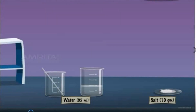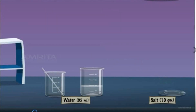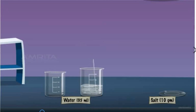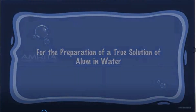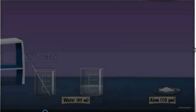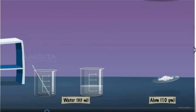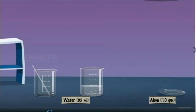Next solution is salt in water. Add 10 grams of salt in 95 ml of water and stir the mixture vigorously. Next is alum in water. Put 10 grams of alum in 95 ml of water and stir the solution vigorously.